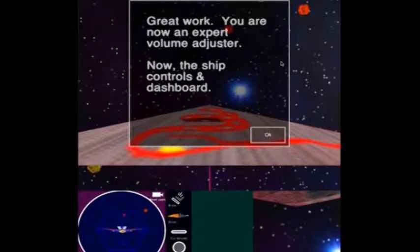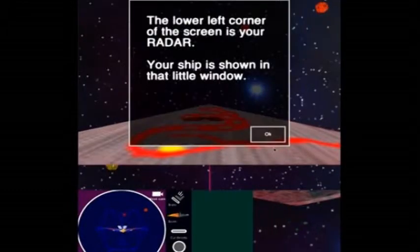Great work. You are now an expert volume adjuster. Now, the ship controls and dashboard. The lower left corner of the screen is your radar. Your ship is shown in that little window.